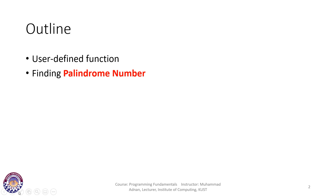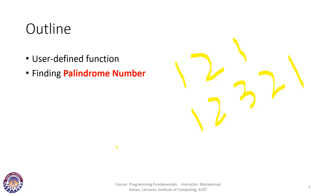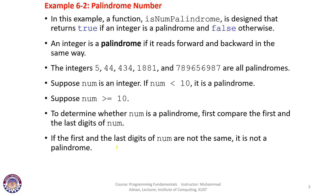For example, if we have 121, this is a palindrome number. Similarly, if we have 12321, reading it forward or backward gives the same number — so this is also a palindrome number. We are going to see how C++ user-defined functions can help us in finding a palindrome number, but before that we need to define the steps.